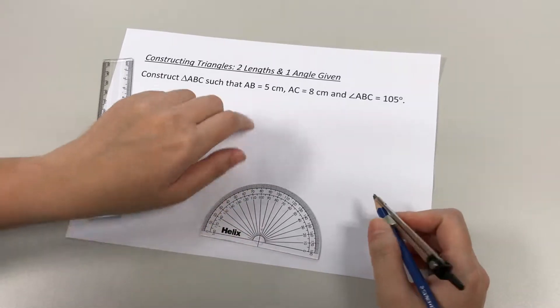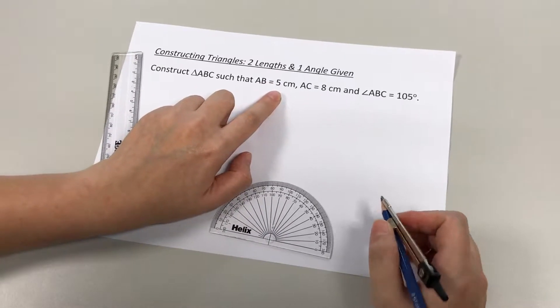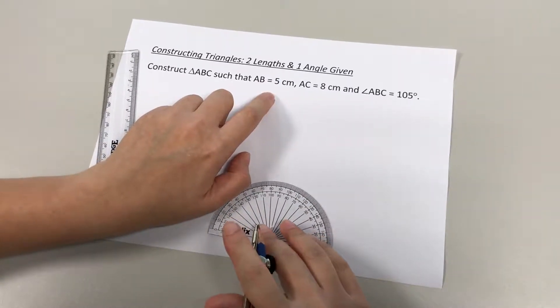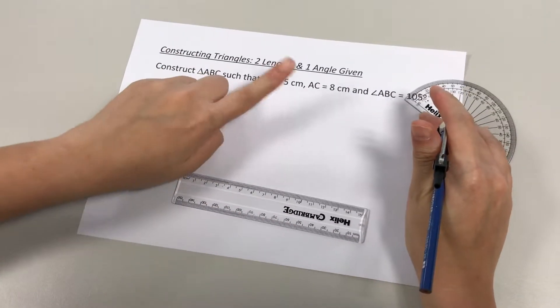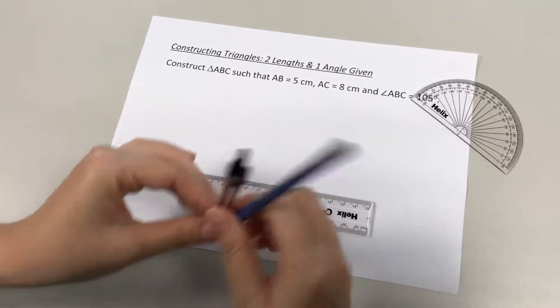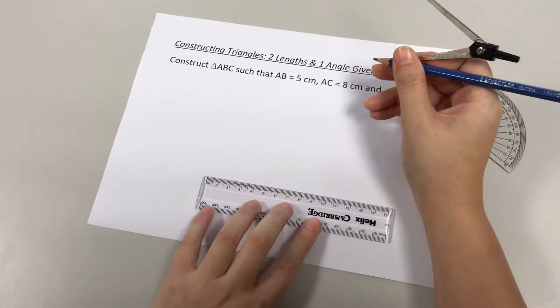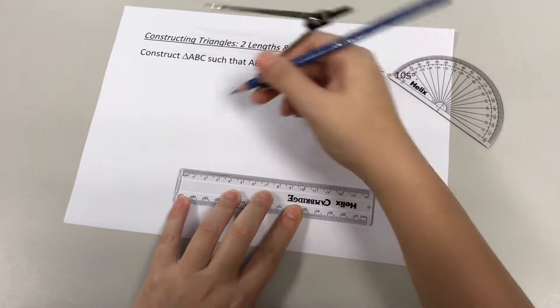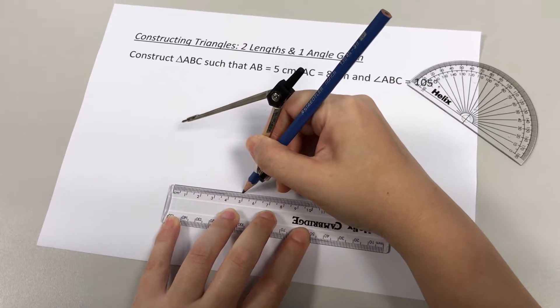We're ready to start. Let's look at the first information we are given: AB equals 5cm. The first thing you do in drawing triangles is always start by using your ruler to draw a straight line. Look at the first length given, 5cm. I'm going to use the ruler to draw a 5cm line from 0 to 5.